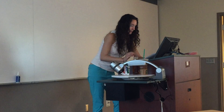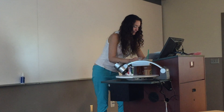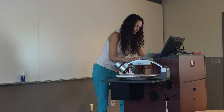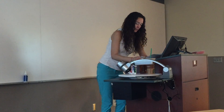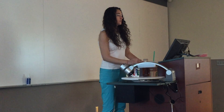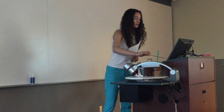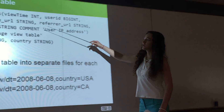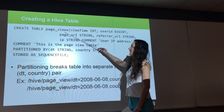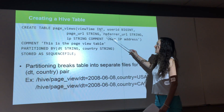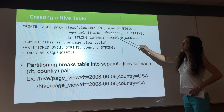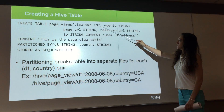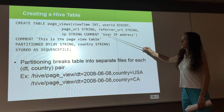The data model that Hive has includes tables, which are very similar to tables in a relational database. We can use CREATE TABLE pretty much like we do in SQL, then give the table name, the names of the attributes, and the data types for them — such as integer, big integer, string, or something else.